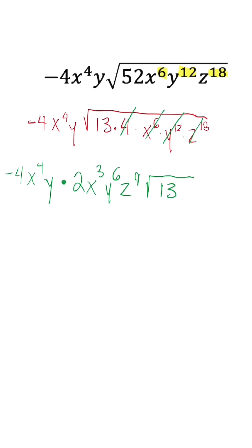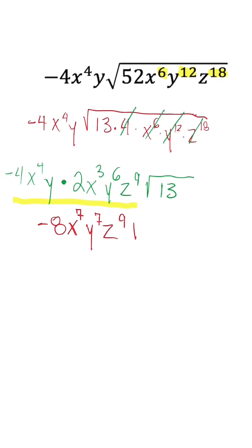What we need to worry about is multiplying and combining this expression on the outside. So once we multiply our coefficients, we get negative 8. And then once we add our exponents for like terms, x is going to change to the 7th power once we add 4 and 3. And then y is going to change to the 7th power as well because of 6 plus 1. z to the 9th stays the same because there's no other z exponent or base for us to multiply with.